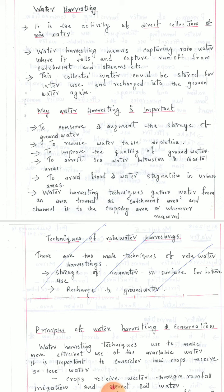Water harvesting is the activity of direct collection of rainwater. It means capturing rainwater where it falls and capturing runoff from catchments and streams. This can be said as the collection of rainwater which may be direct, or it may be collected from runoff resources or from the catchment area. This collected water could be stored for later use and recharged into the groundwater again.